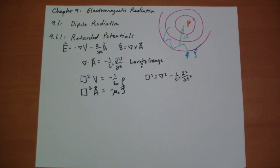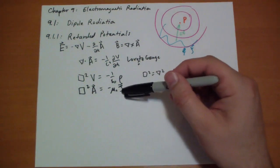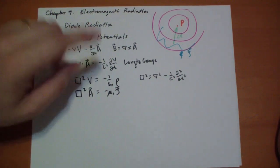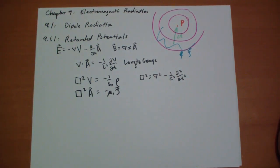If we didn't have any sources, if our rhos and our J's were zero, then we'd just have straightforward wave equations. We'd have the Laplacian of V equals the second time derivative of V. If we don't have sources, we get the homogeneous wave equation solutions. If we do have sources, we get inhomogeneous wave equations.